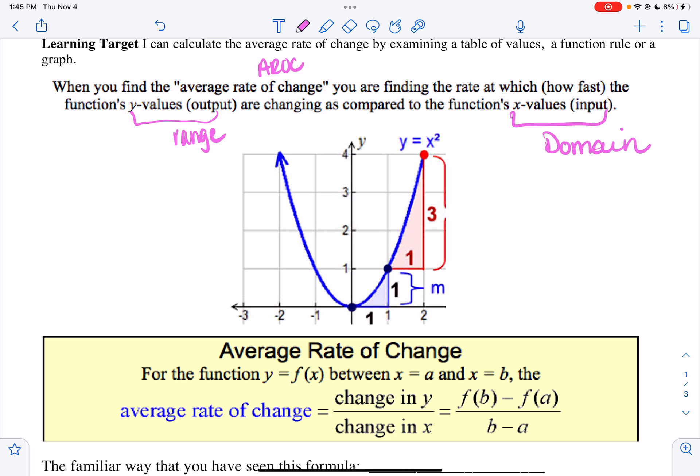So if we look, we have a graph of y equals x squared, and basically my x value changes by 1 from 0 to 1, and my y value changes by 1 from 0 to 1. When I look at the interval from 1 to 2, I jump by 1, but then when I plug in 2, I go to 4.